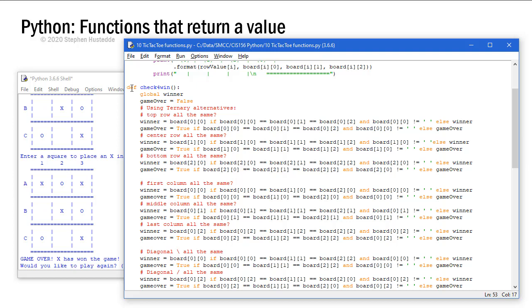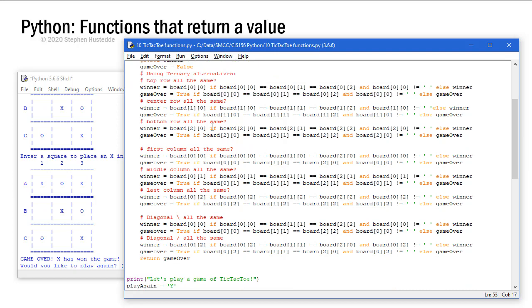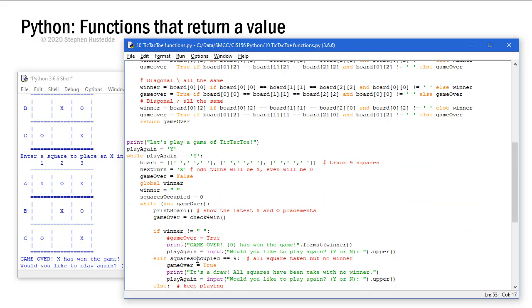The nice thing here is our definition for check for a win is a smaller piece of code that we could actually unit test and make sure this all works for different variations of the board list and see if it finds all of these eight different possible ways to win without having to play the entire game.